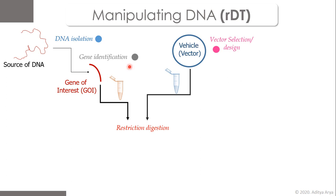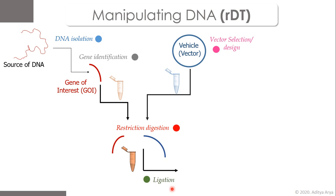The ends of the gene of interest are cut to be compatible with the ends of the cleaved vector, so restriction digestion helps make the ends compatible. The process of joining them is known as ligation, performed with the help of ligase enzyme. Restriction digestion uses type II restriction endonucleases, which specifically recognize a DNA sequence and cleave within that recognized sequence.